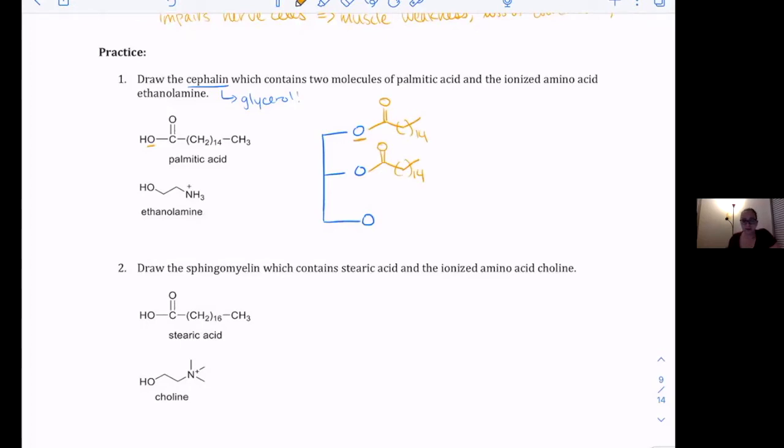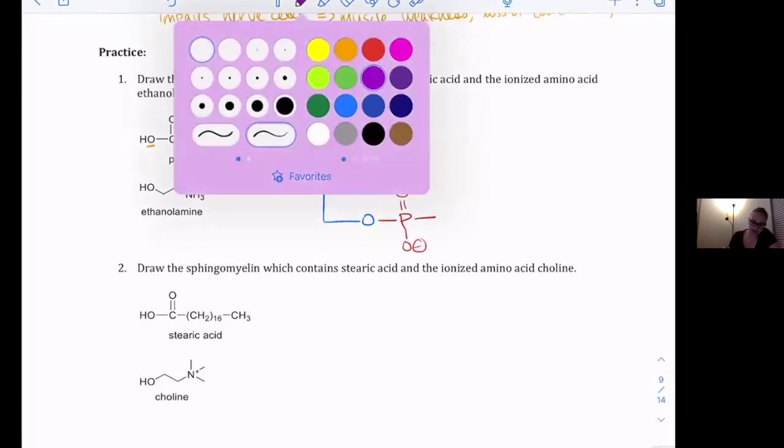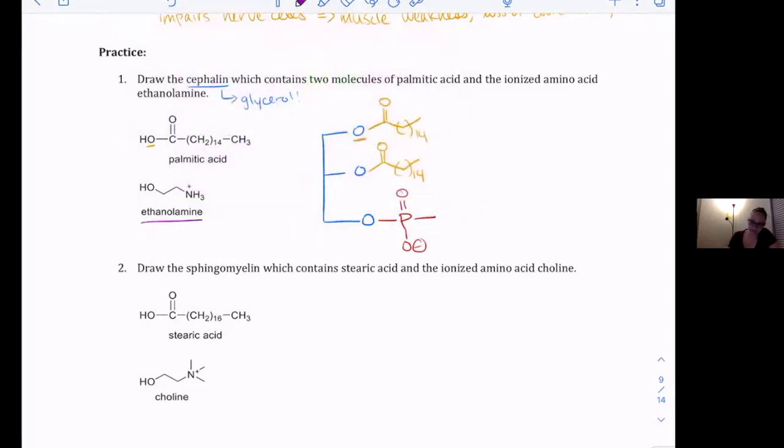And then lastly we need to put our phosphate and amino alcohol on the very bottom. So first we know that we have our phosphate, so let's draw that in. And then we're going to have our ethanolamine, so we have our oxygen from that and then NH3 plus.